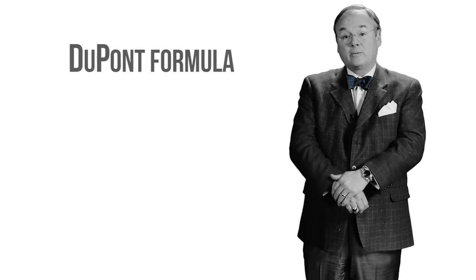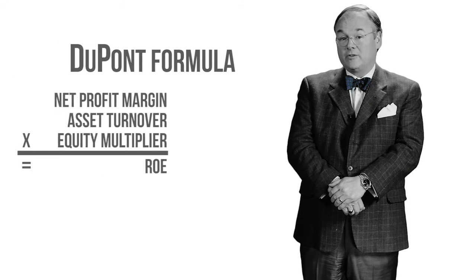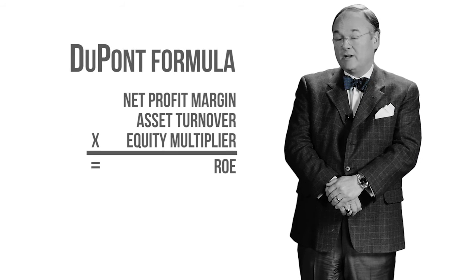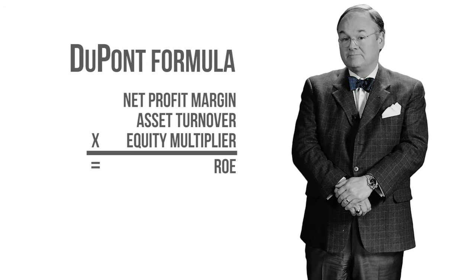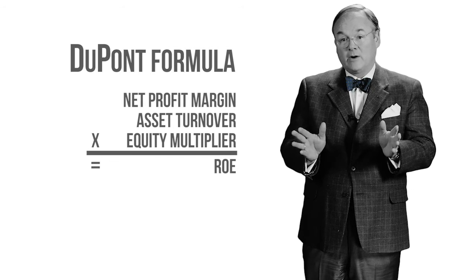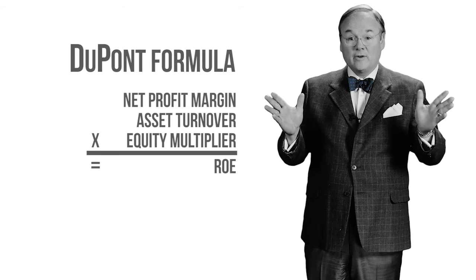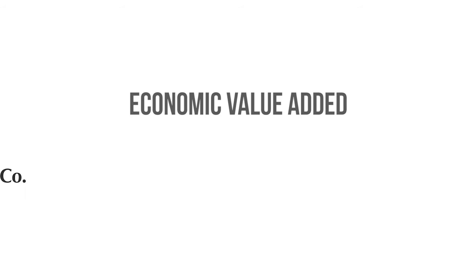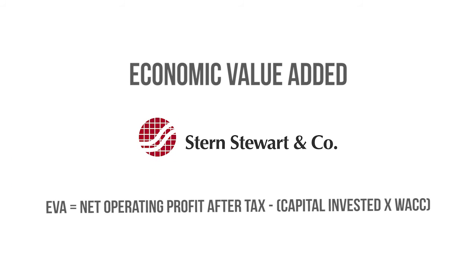The V Formula owes some debt to the DuPont Formula, which was created in the 1920s by the DuPont Corporation to compute equity rates of return. That formula was more of an accounting-based formula, however, and it has fewer variables. The formula was also inspired by the notion of economic value added, which was introduced by Stern Stewart & Company — a performance metric that calculates the creation of shareholder value.